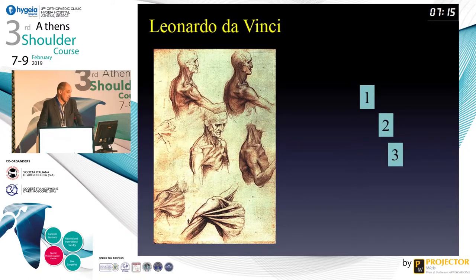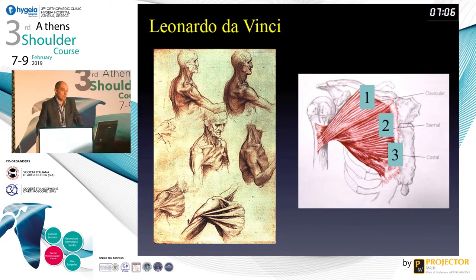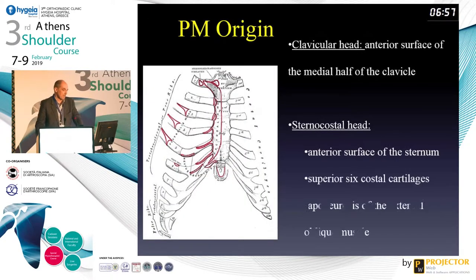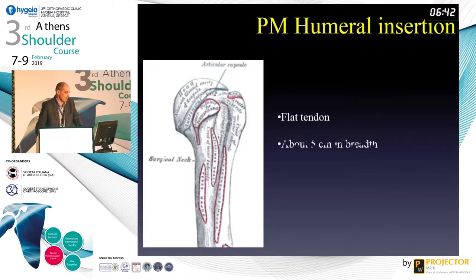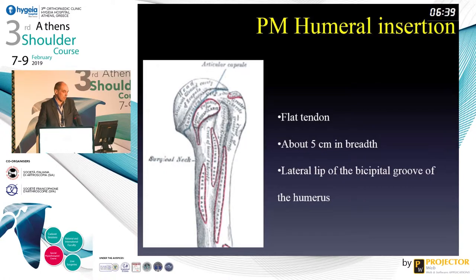Leonardo da Vinci thought there were four portions for the tendons of the subscap. In fact we know today there are not four but only three - but even this drawing is wrong, because we now consider there are only two portions. There is the clavicular head of the pec major and the sternocostal head. Only two, even if anatomists prefer to say three. On the humerus, the tendon is very flat, about five centimeters on the lateral lip of the bicipital groove.